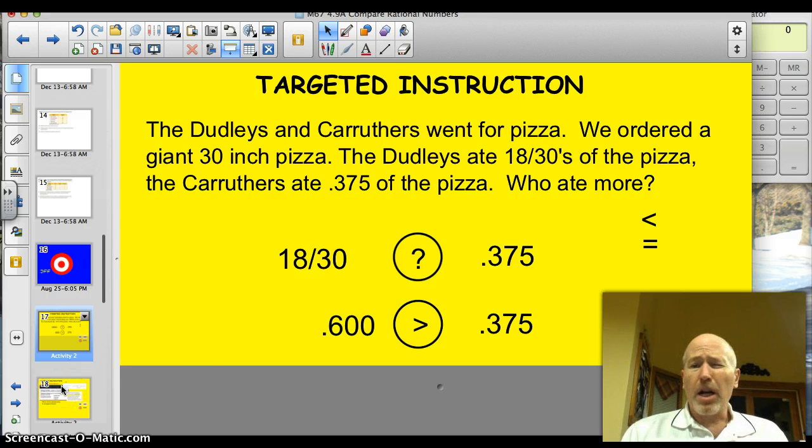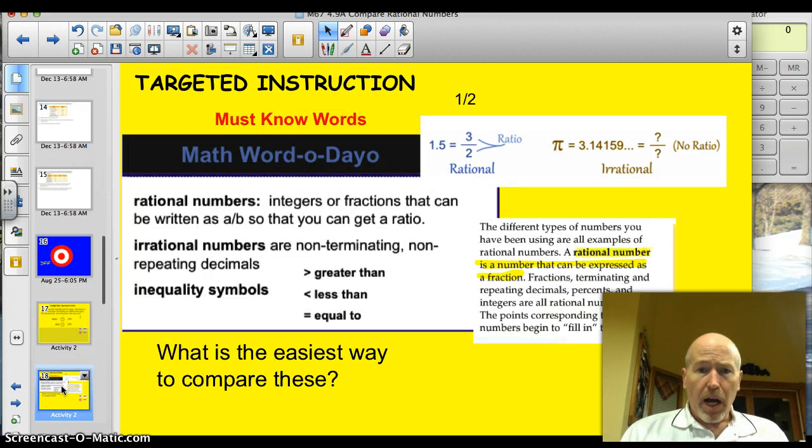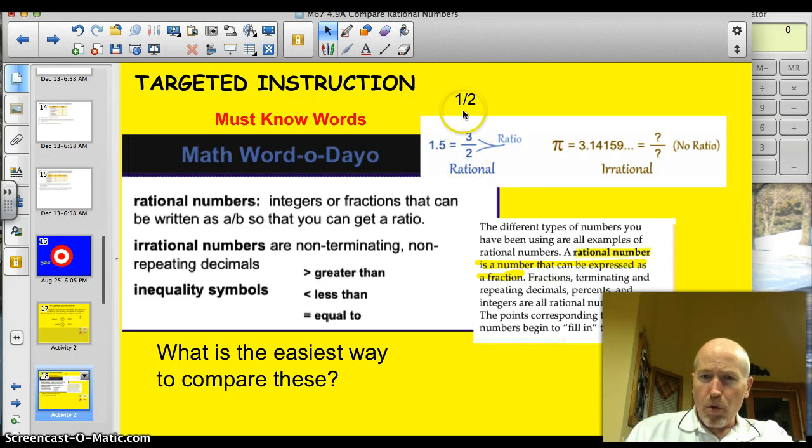Let's take a look at a couple of words that I think we're going to need to be familiar with today. Rational numbers. These are integers or fractions that can be written as A over B. So you can get a ratio. That's kind of hard. I like this definition over here. A rational number is a number that can be written as a fraction or expressed as a fraction. Take a look up top here. This rational number, 1.5, they wrote this 3 over 2. There's a ratio. Or 1 half would be another rational number because we can write it as a ratio or fraction.